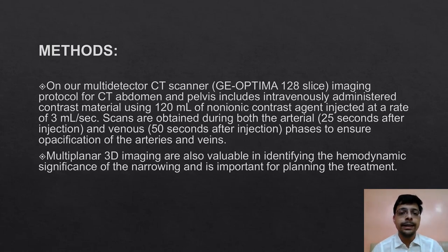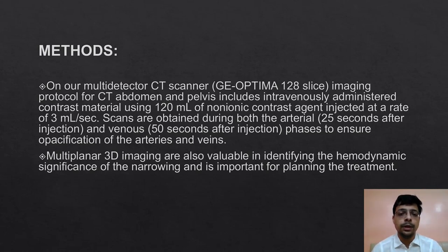On our multi-detector CT scanner GE Optima 128 slice, imaging protocol for CT abdomen and pelvis includes intravenously administered contrast material using 128 ml of non-ionic contrast agent injected at a rate of 3 ml per second. Scans are obtained during both the arterial and venous phases to ensure opacification of arteries and veins. Multi-planar 3D imaging is also valuable in identifying the hemodynamic significance of the narrowing and is important for planning the treatment.